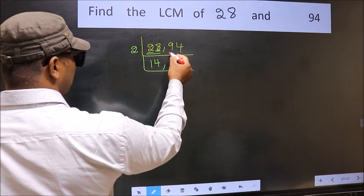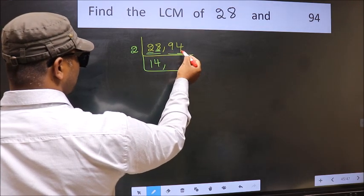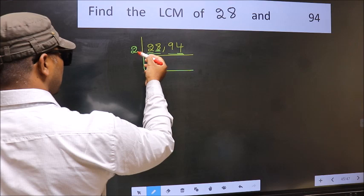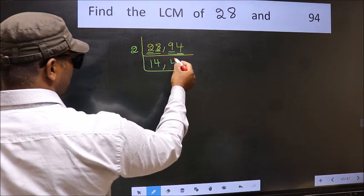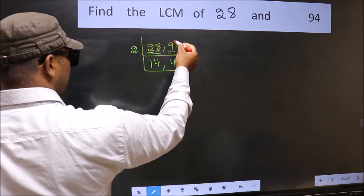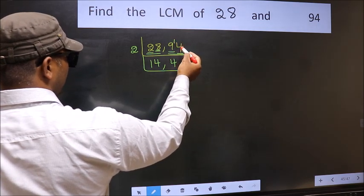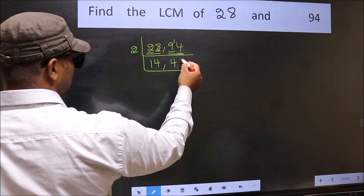Now the other number 94, last digit 4, even, so this is divisible by 2. First number 9, a number close to 9 in the 2 table is 2 fours are 8. 9 minus 8 is 1, carried forward 14. When do we get 14 in the 2 table? 2 sevens are 14.